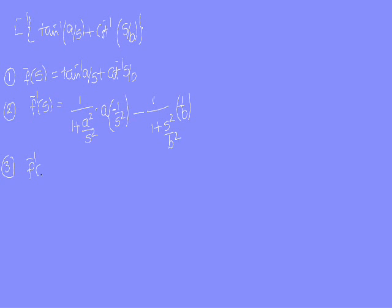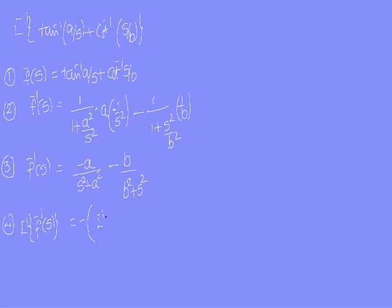Step 3: simplify f-dash(s). The first term simplifies to -a/(s² + a²). The second term: the b² in the numerator and b in the denominator leave -b/(b² + s²) — wait, simplifying gives -1 times b/(s² + b²). So f-dash(s) equals -a/(s² + a²) minus b/(s² + b²). Step 4: applying L inverse, L inverse of f-dash(s) equals -sin(at) minus sin(bt).